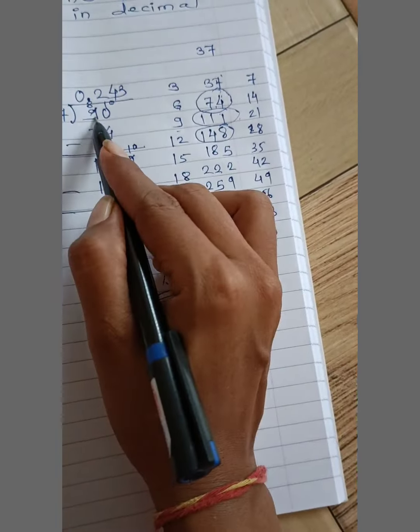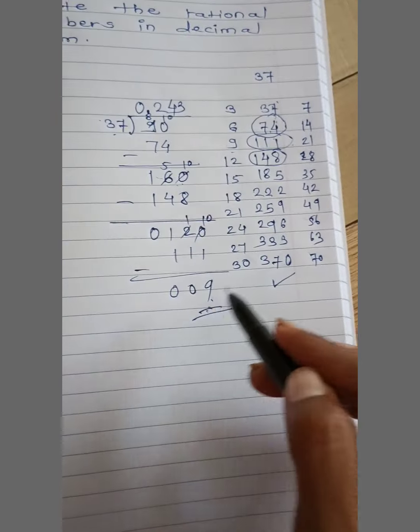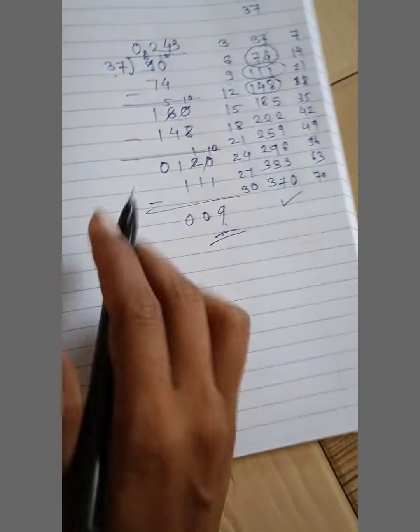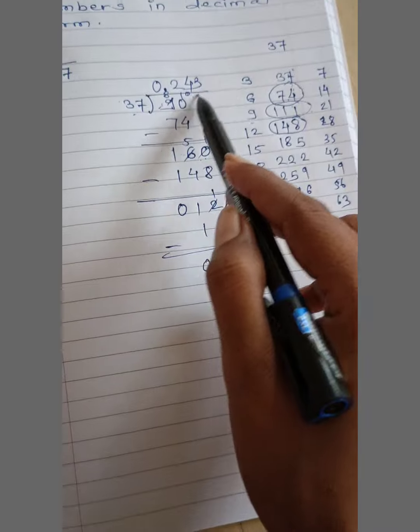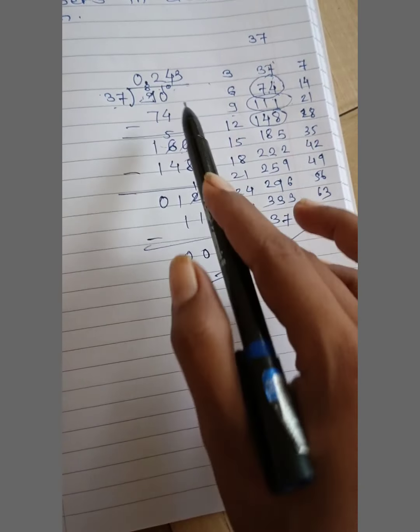Then 9. Dekhoon 9 repeat ho ra hai. 9 ae ga phir se. 1, 6, 0 ae ga. Then 1, 2, 0. So here 2, 4, 3 is a repeated number.